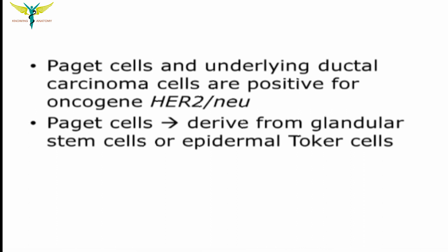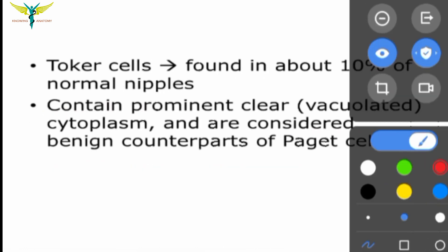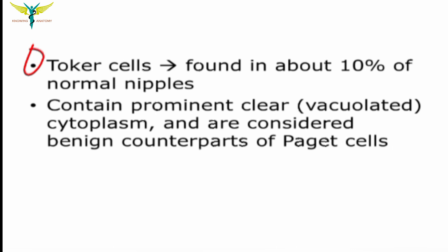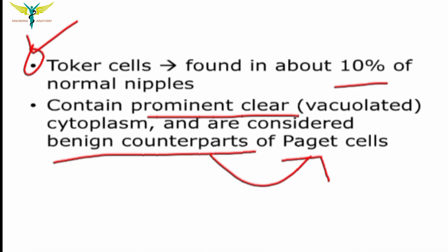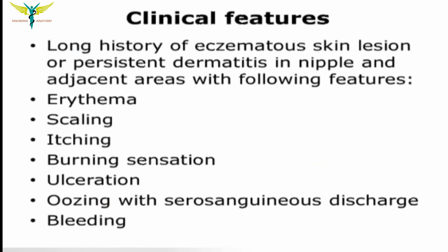The Paget cells and the underlying ductal carcinoma cells show a positive HER2 oncogene. These Paget cells are derived from glandular stem cells or epidermal Toker cells. Toker cells are present in about 10 percent of normal nipples, contain prominent pale cytoplasm, and are considered the benign counterparts of Paget cells.